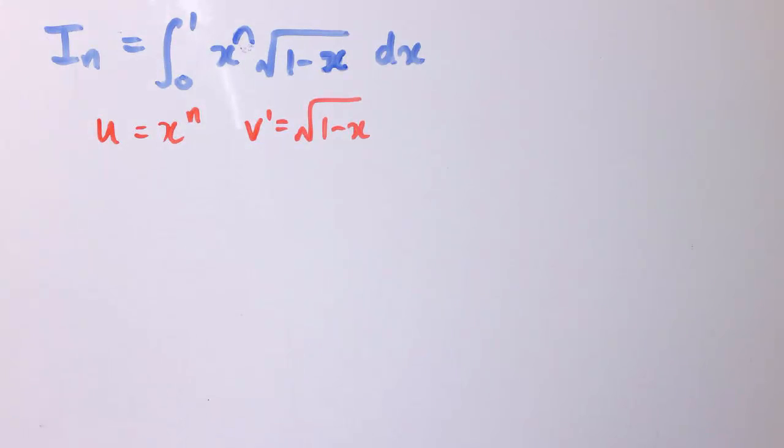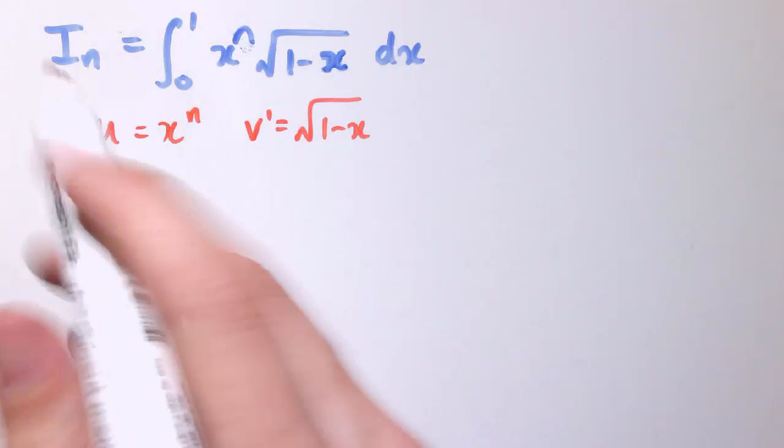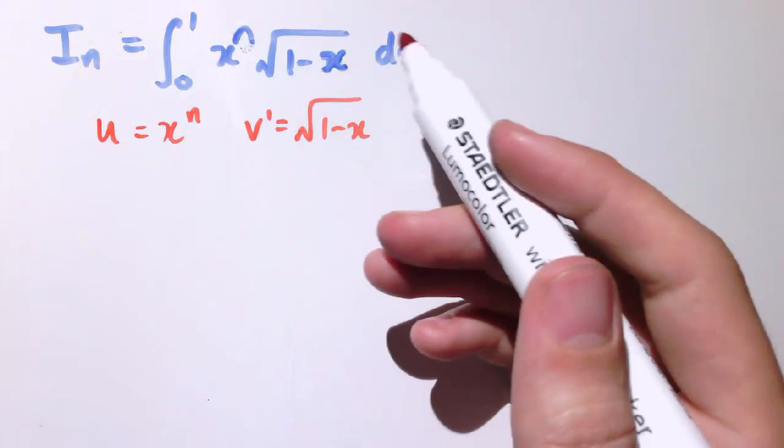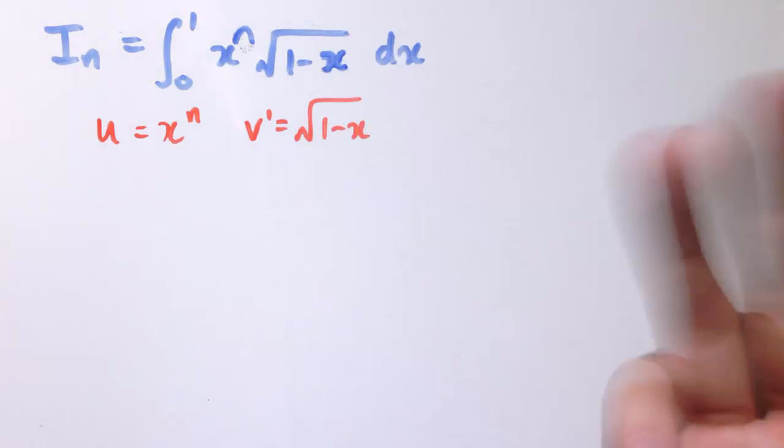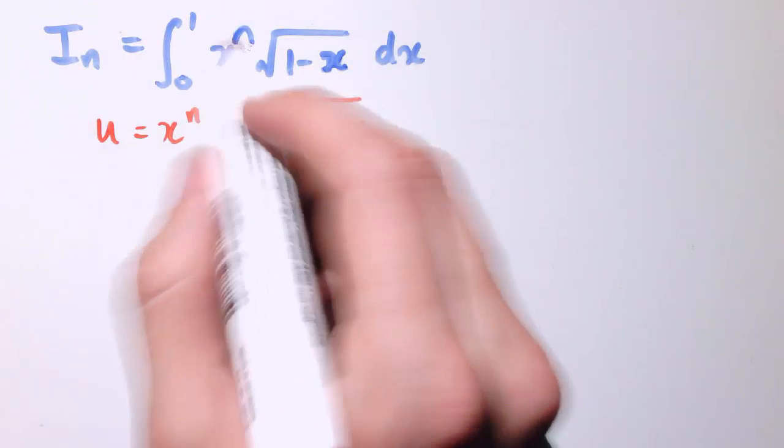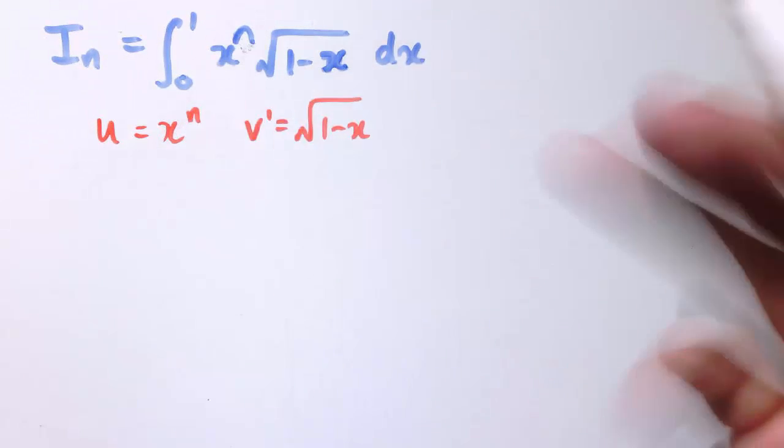But ultimately if I want a reduction formula that relates n to a lower value, say n minus 1 or n minus 2, I think differentiating x to the n is likely to give us something that has x to the n minus 1 in it.